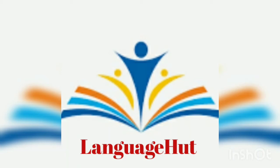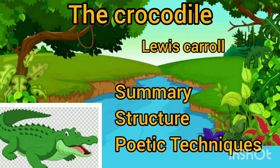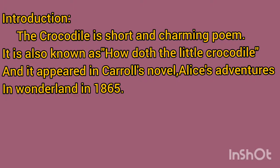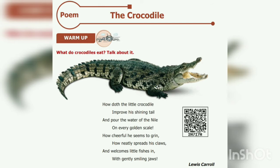Hi viewers, welcome to Language Hut. Today we are going to see the summary, structure, and poetic techniques of the poem 'The Crocodile' by Lewis Carroll. The Crocodile is a short and charming poem, also known as 'How Doth the Little Crocodile,' and it appeared in Carroll's novel Alice's Adventures in Wonderland in 1865.